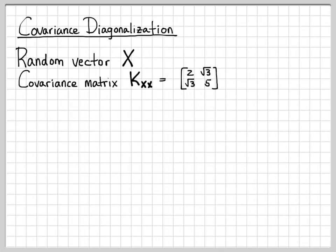In this problem, we're going to look at how to diagonalize a covariance matrix. We're going to work with the random vector x, which has a covariance matrix K_xx equal to [2, sqrt(3); sqrt(3), 5]. The random vector x is a length-2 vector, so its covariance matrix is 2 by 2.